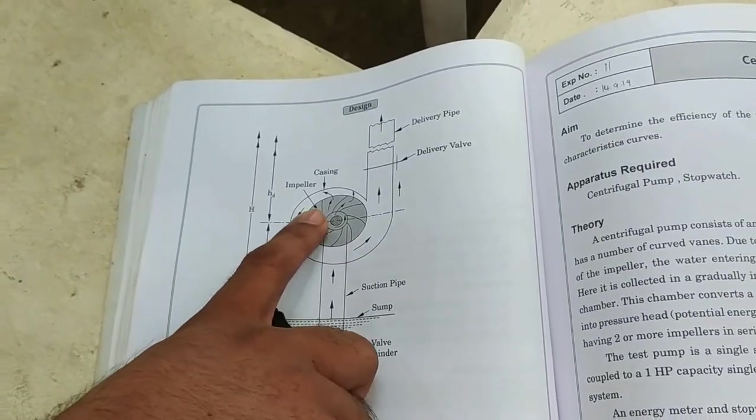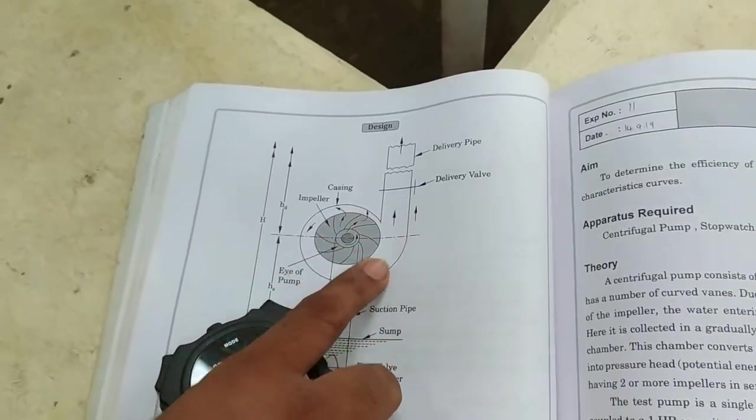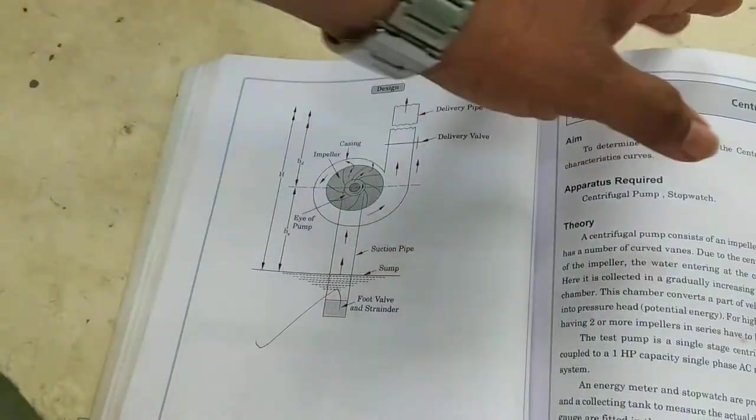The water starts entering at the center, now flows to the outward of the periphery, and so we will see how to tabulate the readings.